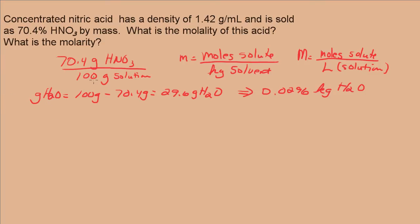Now, next thing we need to do is convert the grams of HNO3 to moles of HNO3. We have 70.4 grams of HNO3 and one mole of HNO3 is 63.01 grams. And, this works out to be 1.12 moles of HNO3. So, now we have what we need to calculate the molality.